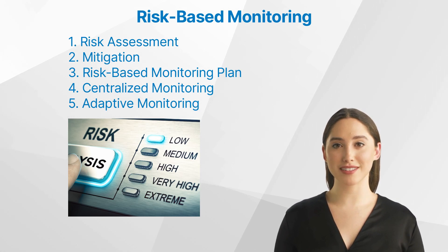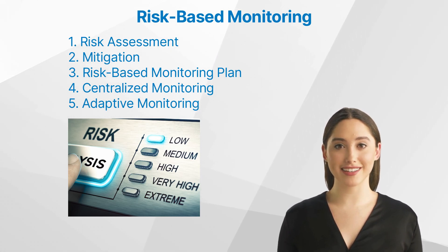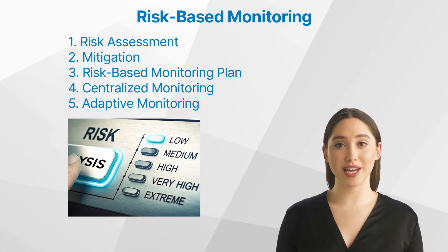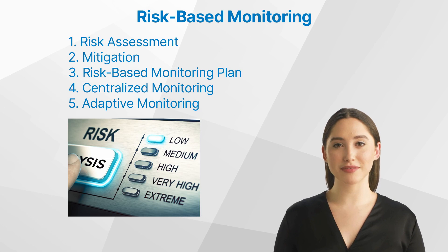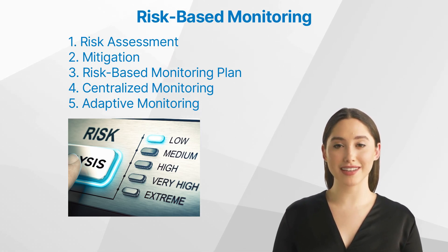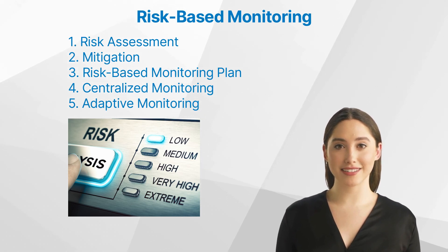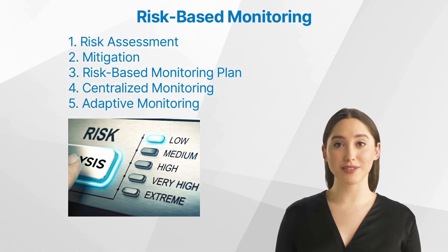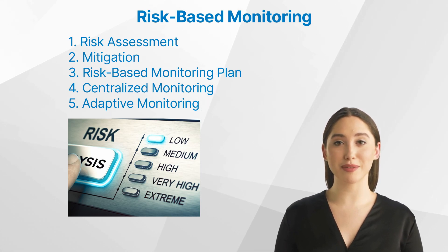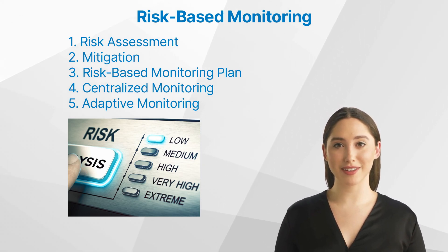Second, Mitigation: once risks have been identified and assessed, appropriate risk mitigation strategies are developed to prevent or minimize their impact on the trial. These strategies may include changes to study design, protocol, or monitoring plan. Third, Risk-Based Monitoring Plan: this is a detailed plan outlining the monitoring activities that will be performed during the trial, based on the identified risks. It specifies the type, frequency, and intensity of monitoring activities for each study site and data element.